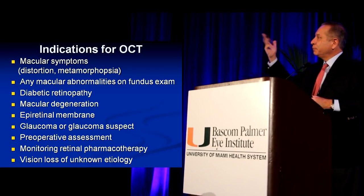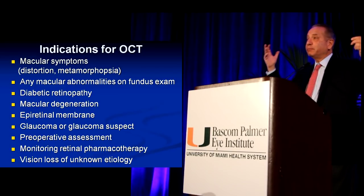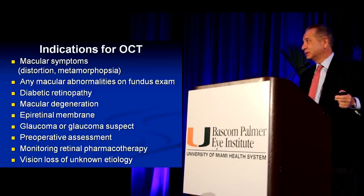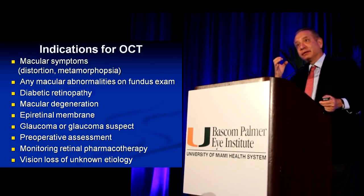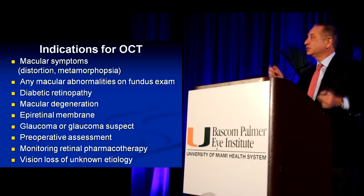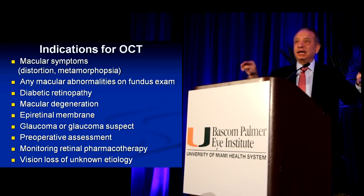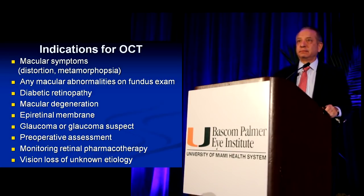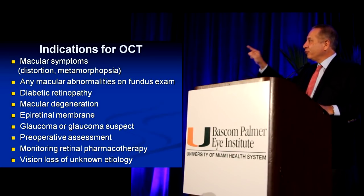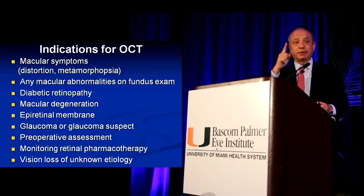To give you one example: patients come in and they say the macula is on. There is a macula-on retinopathy for which the prognosis is supposed to be better than for macula-off retinopathy. But in many cases where the macula is on, when you do an OCT, you see that there is subretinal fluid under the fovea and the macula is actually off. So every retinal evaluation should include OCT, including preoperative evaluation.